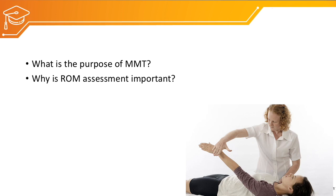We also discussed the importance of assessing range of motion — finding out the available range of motion is important so that we can grade the muscle strength accordingly. The next important point was the role of gravity: grade 3 muscle strength can perform against gravity, but grade 2 cannot perform movement against gravity.